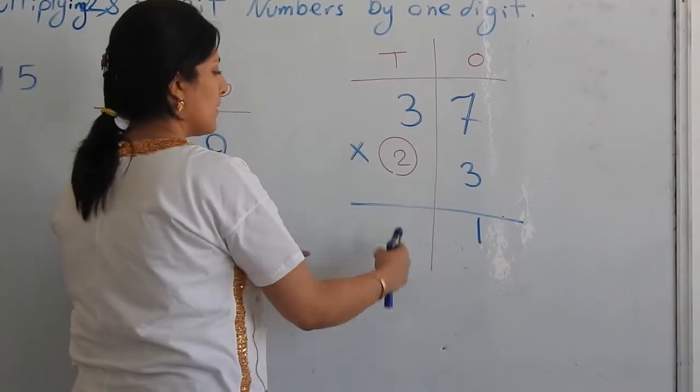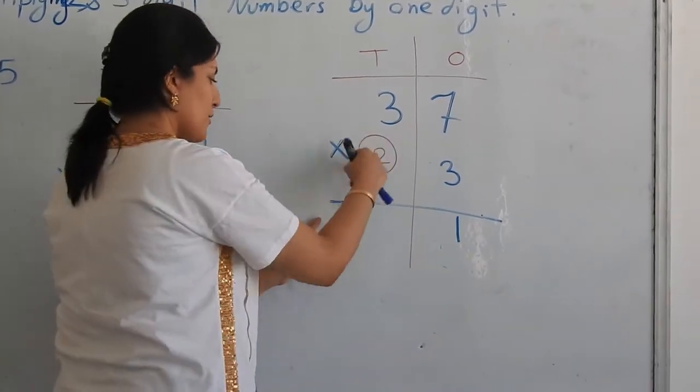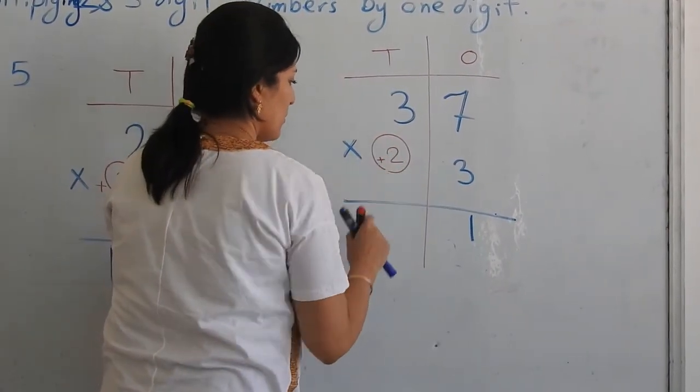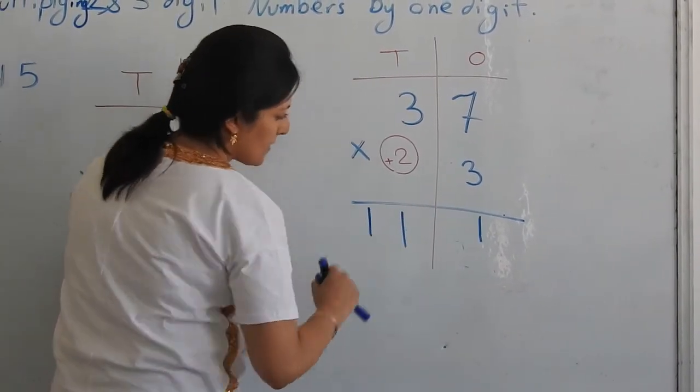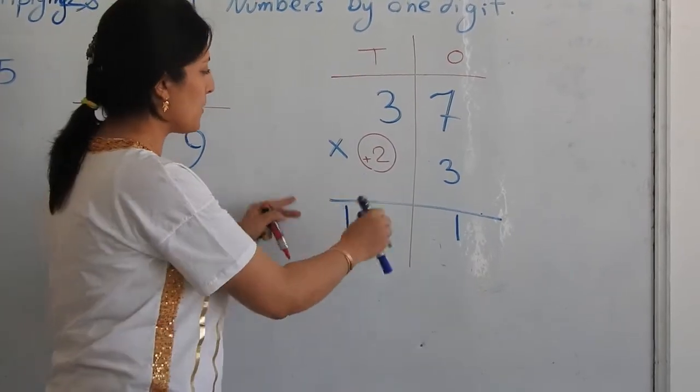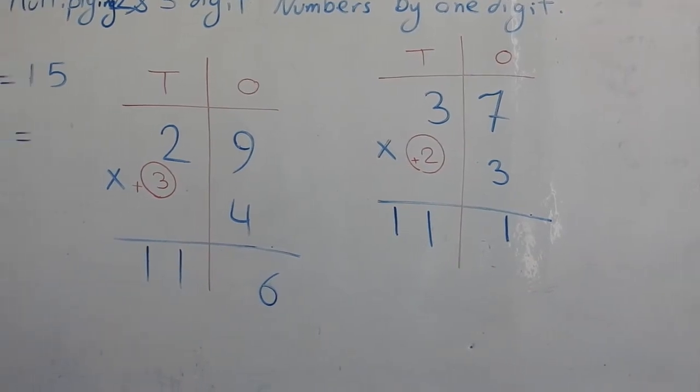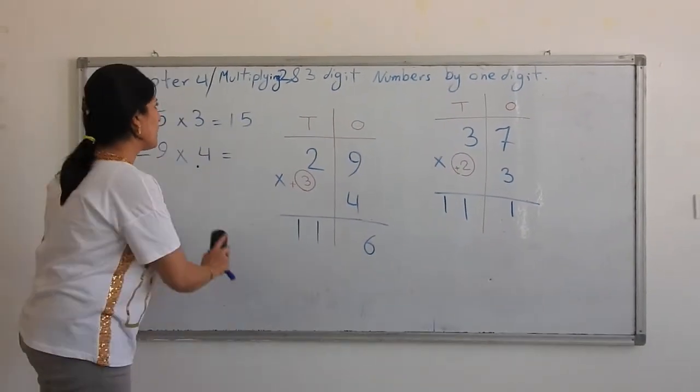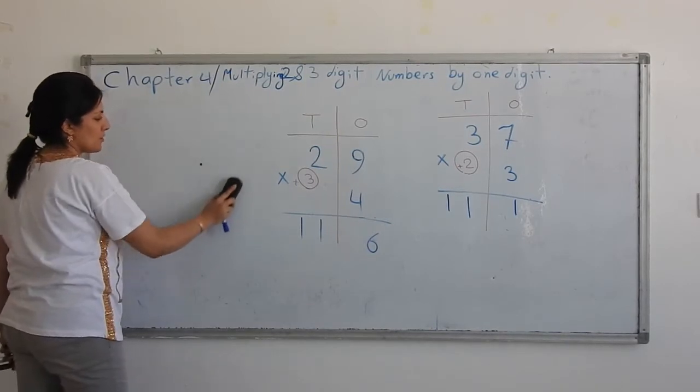Finish. Go to the next house. Three times three, nine plus two, eleven. The last house I am free to write the number, all the digits. So it was multiplication of two digit number and one digit number.